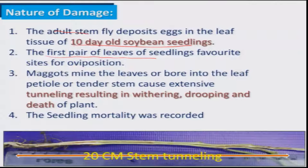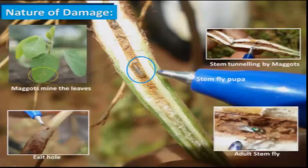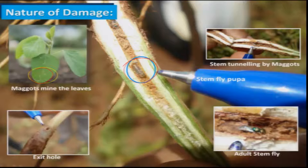The maggot is the damaging stage. It mines into the leaves and petiole, then gets entry into the stem causing extensive tunneling, which results in withering, drooping, and total death of the plant — total seedling mortality in the field. The maggot causes severe damage, and pupation also takes place in the stem itself. The adult emerges inside the stem through a small emergence hole.